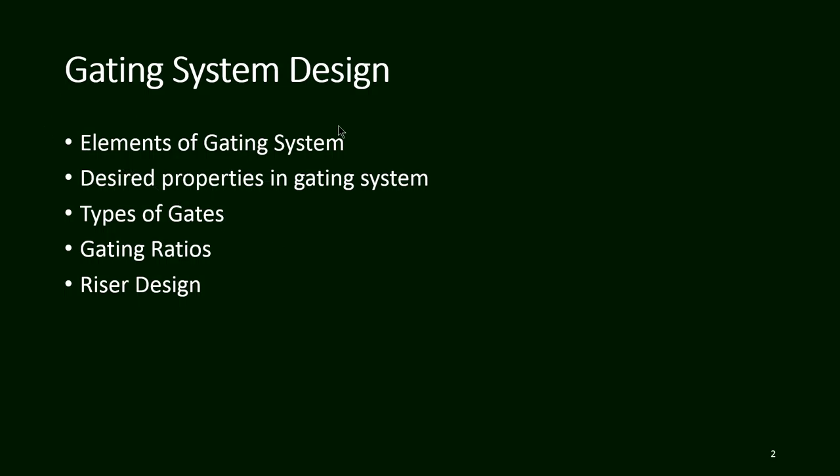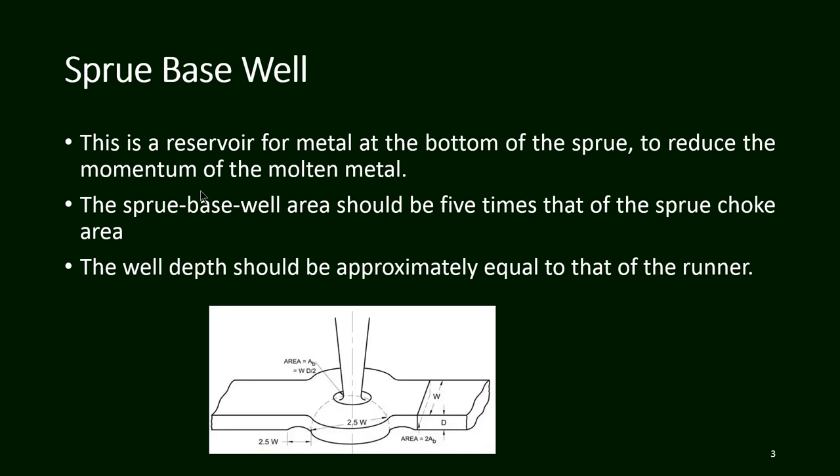We were continuing the gating system. We have already talked about the different elements of the gating system: the first one is the pouring basin, in which metal is poured from the ladle. From the pouring basin the molten metal comes into a sprue, from the sprue it goes to the runner, and through the gate from the runner it reaches the gate, and through the gate the molten metal enters into the mold cavity. We have also talked about the desired properties in the gating system.